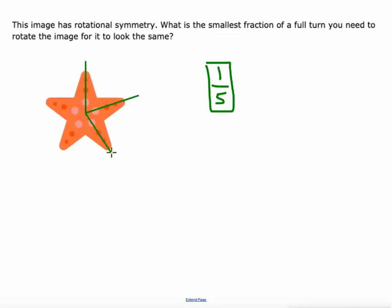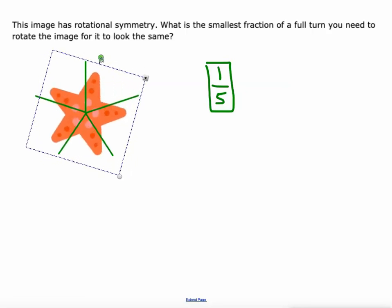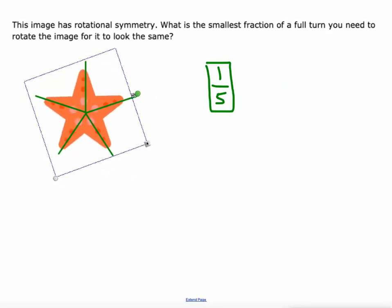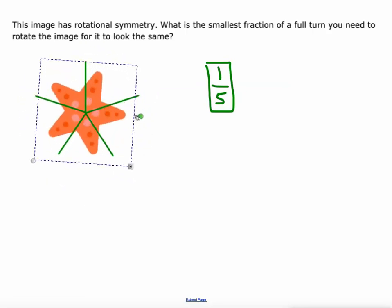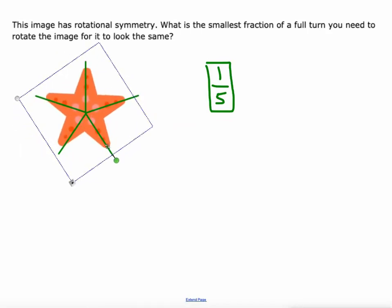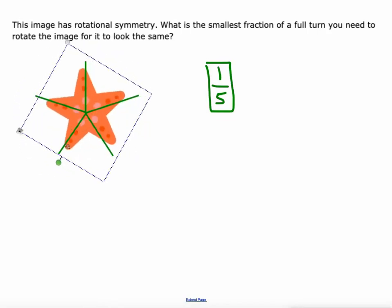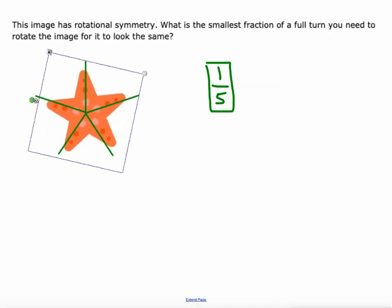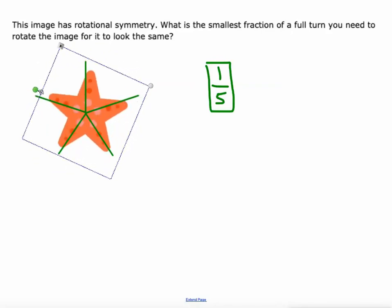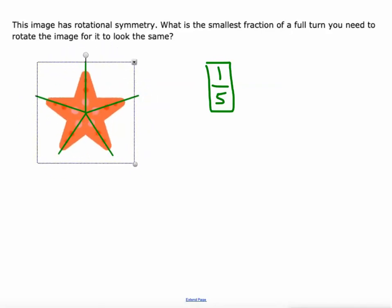There's other ways to draw these lines, but you'd still have five of them no matter what. Grab the starfish, we'll turn it once. Now it looks the same as it originally does. Twice, looks the same. Three times, four times, looks like it originally does. On the fifth rotation, we're back to the beginning. So one-fifth of a turn.